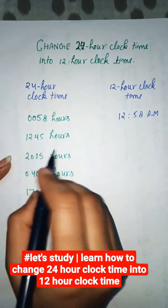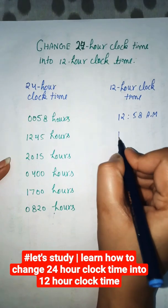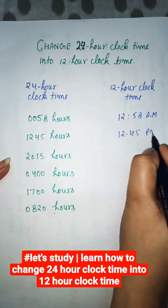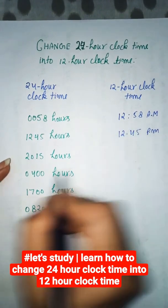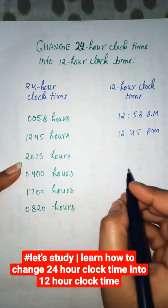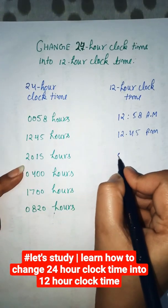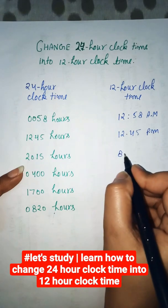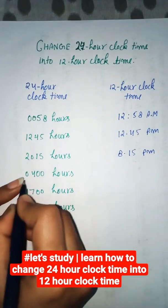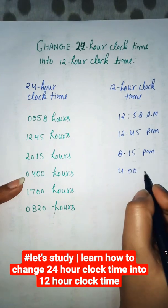1245 — it is post meridian, so we write 12:45 p.m. 2015 — that is 8:15 p.m. 0400 means 4:00 a.m.